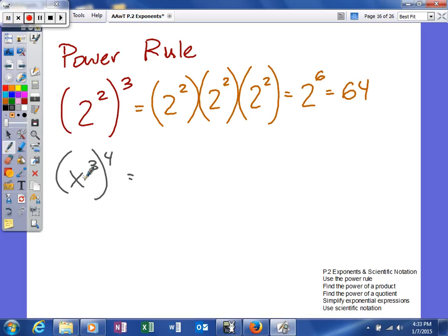On the next one we have x to the third, raised to the fourth power. So this is really going to be x to the third, times x to the third, times x to the third, times x to the third. So our exponent is 4, so we write our base 4 times. When you multiply like bases, the base does not change, but we add the exponents together. So when you add those together, you should get an exponent of 12.